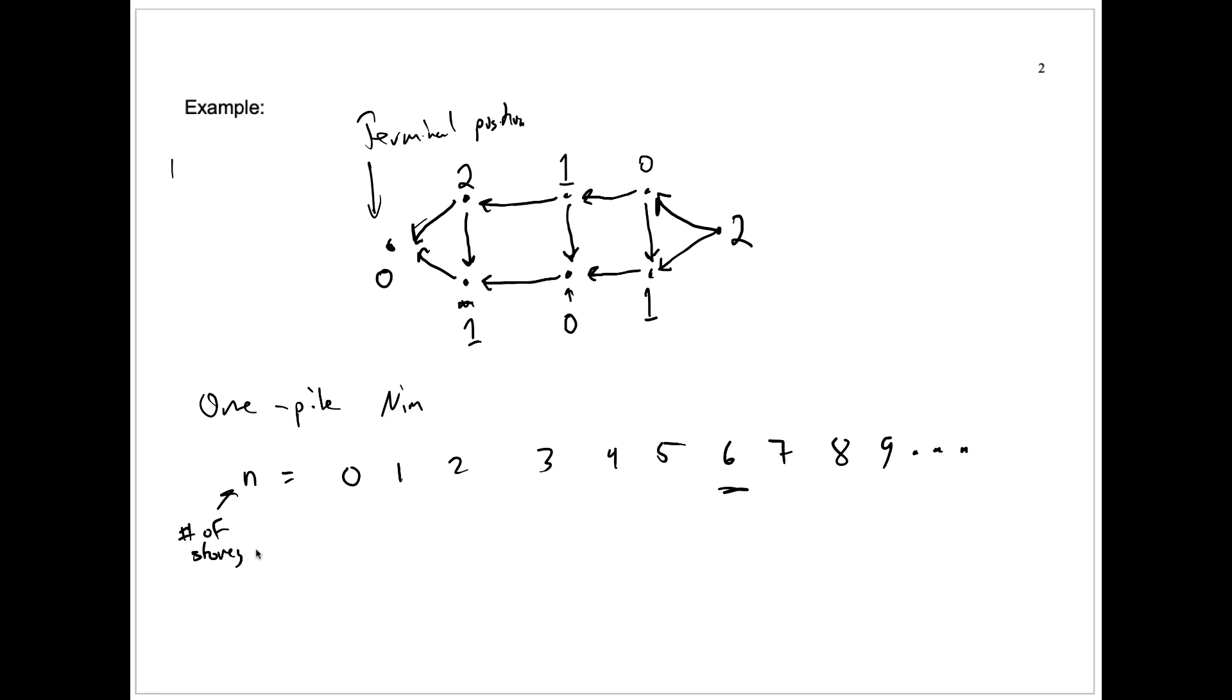So what's the only terminal position? It's zero. So what is g of n? This is the Sprague-Grundy function. I'll just write SG here for Sprague-Grundy function of n. And that will be zero for the terminal position, which is zero.